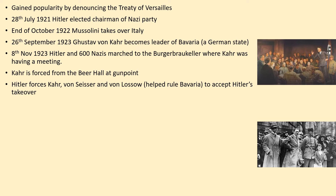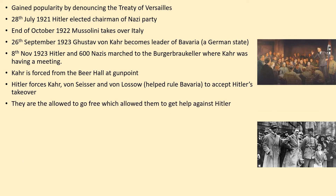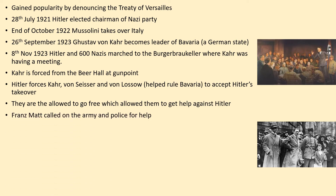Hitler was hoping that once he had claimed Bavaria for his own, the entirety of Weimar would fall at his feet. However, he makes perhaps the most significant mistake — he allows them to go home. You don't take people at gunpoint and then let them leave for dinner. They were allowed to go free and immediately went to call for help, ringing the army and the police to put down the takeover.